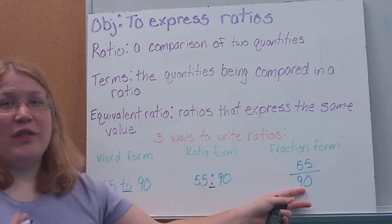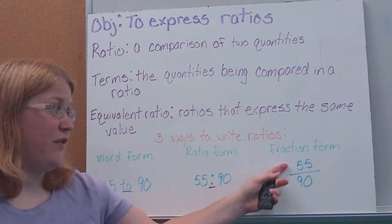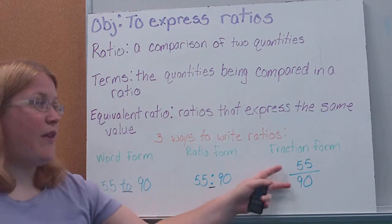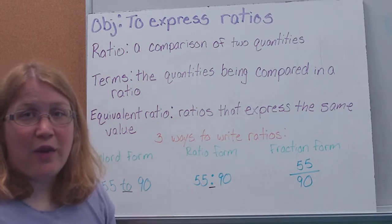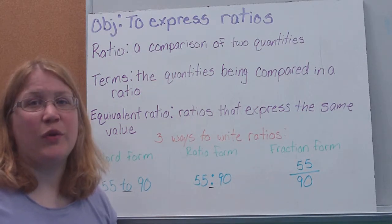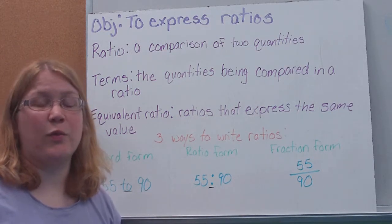Finally, you'll notice this is probably what you're familiar to seeing, fraction form. Here it's the same as a fraction. 55 to 90, or 55 over 90. If you can remember that they're the same as writing fractions, that should really help you with determining equivalent ratios and the whatnot as well. Try to remember your fractional rules as well, because a lot of those will be applicable here.